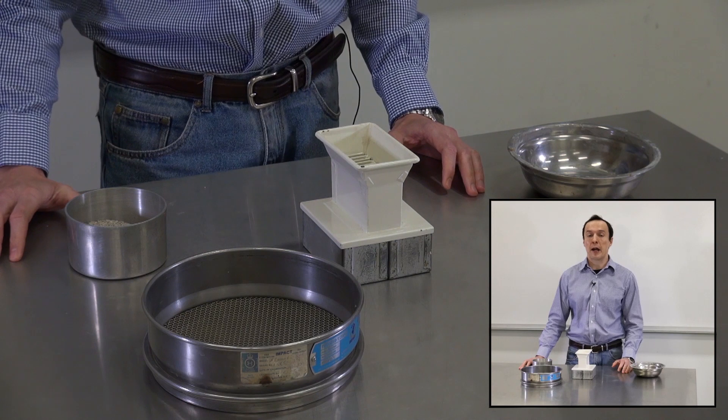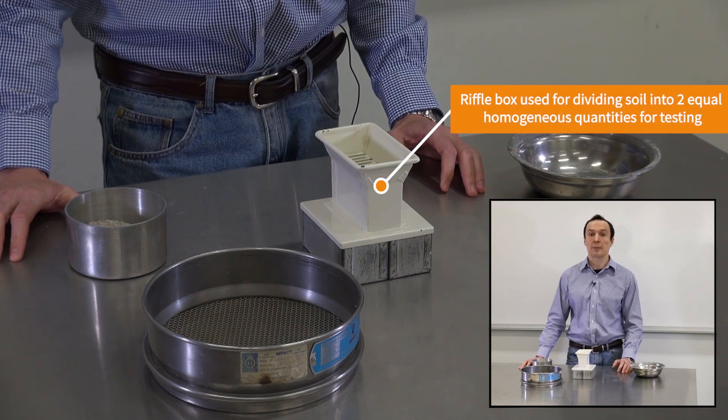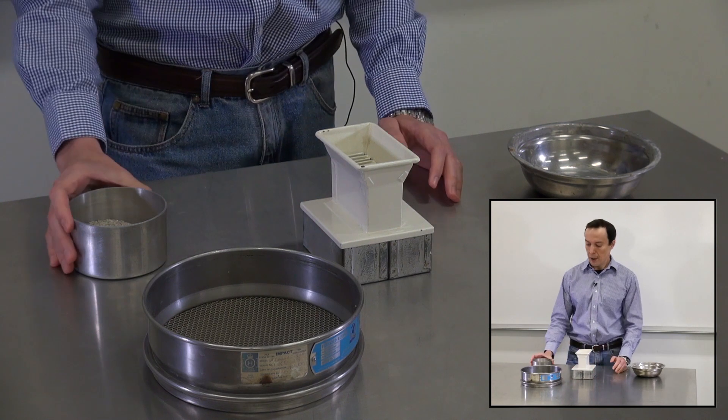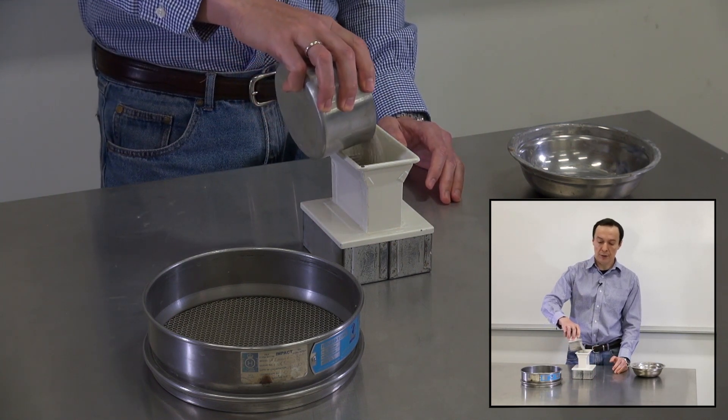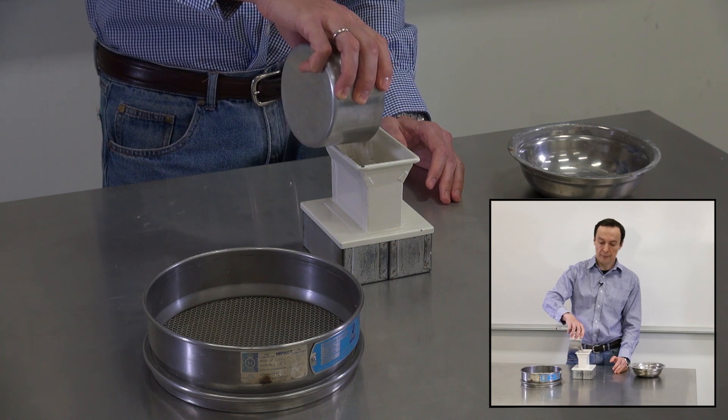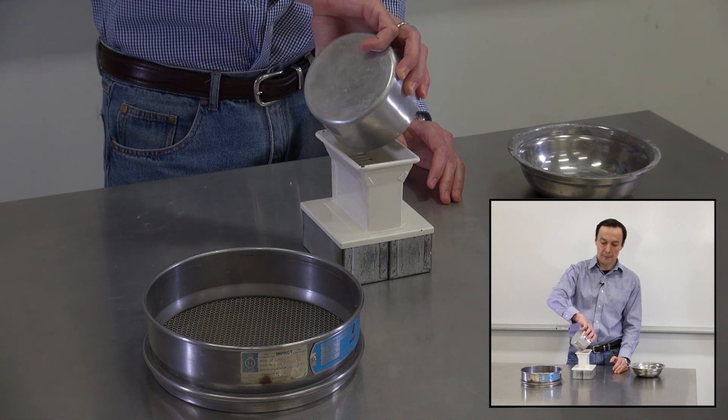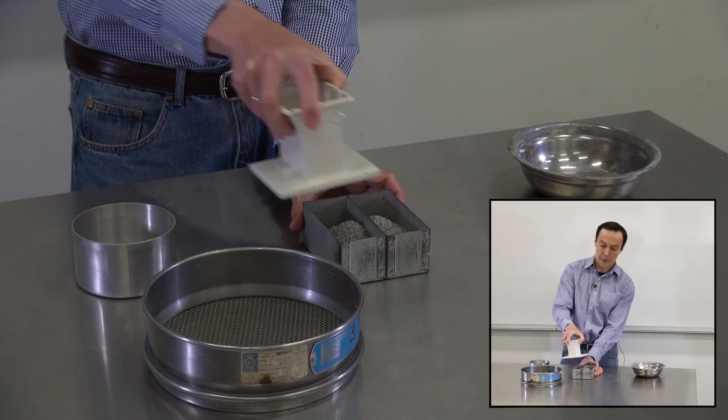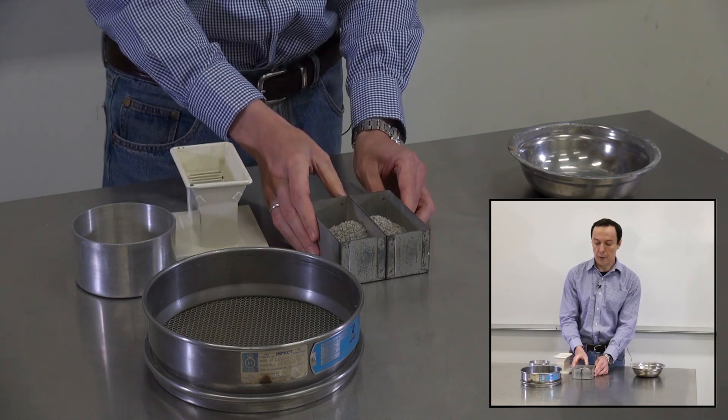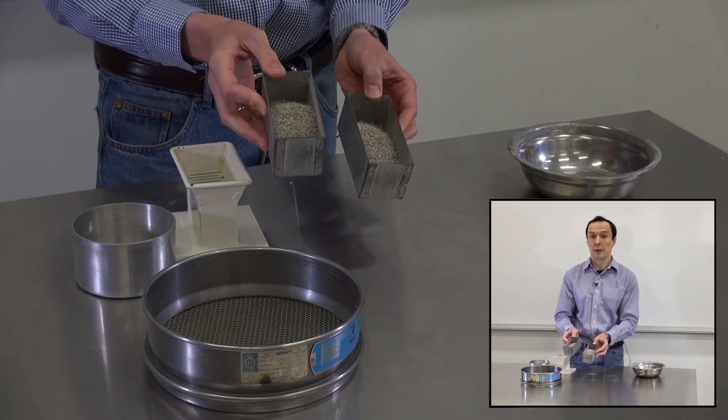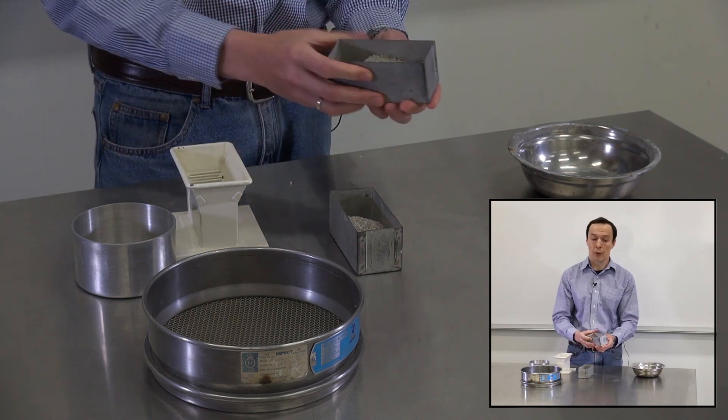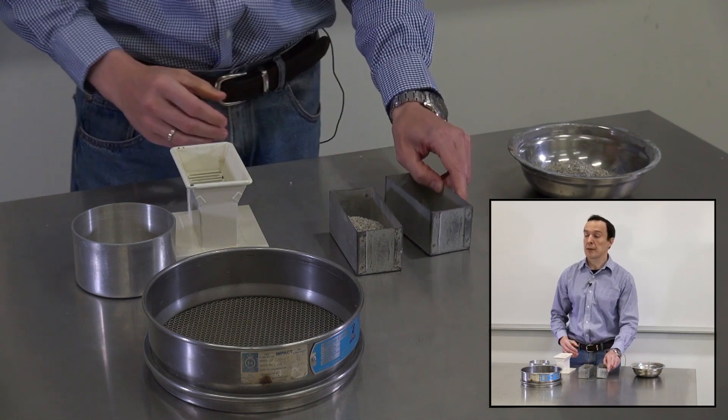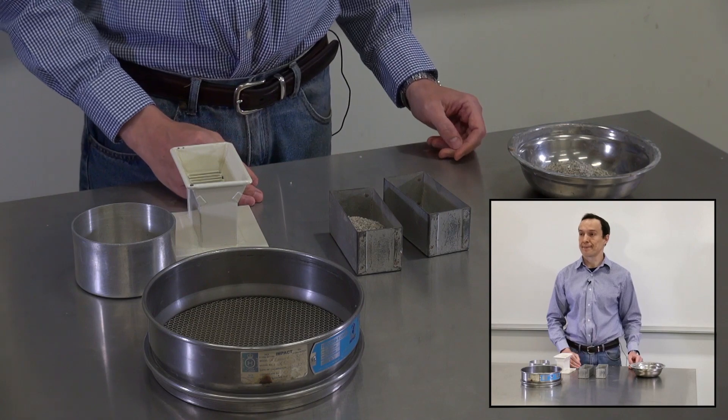Next step, we need to rifle the soil to obtain a sub-sample, and we're going to use a rifle box, and we're going to pour a sample in the rifle box. And then we have two sub-samples, and we use one of them, and we're going to pour it in this bowl. After this, we can start our test.